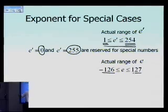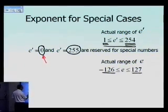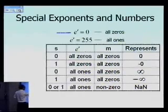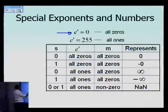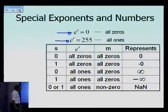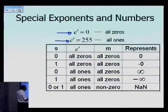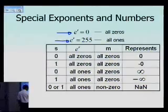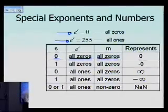The actual range for the actual exponent will be 127 subtracted from here, and we'll get minus 126 and 127 as the range of the exponent. Why do we not have 0 and 255? Because they represent special numbers. When we have a biased exponent of e' equal to 0, that means we have all 0s. When we have e' equal to 255, we have all 1s, and those all 0s and all 1s stand for certain special numbers.